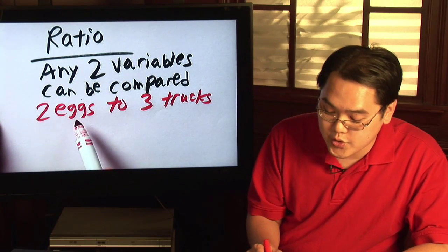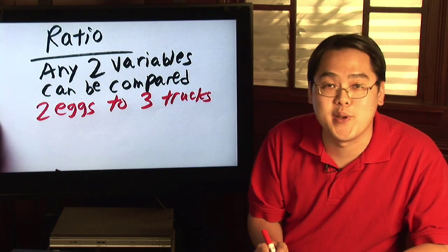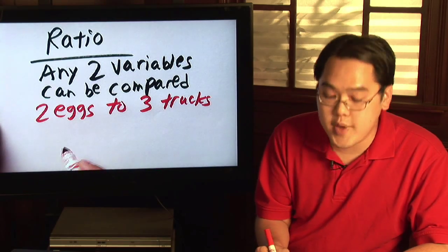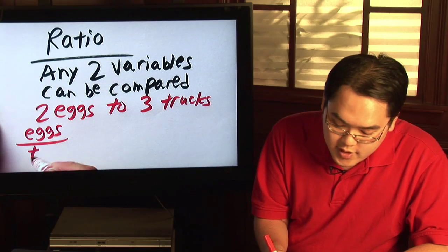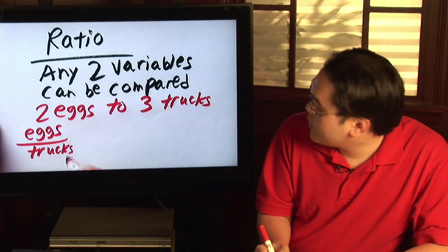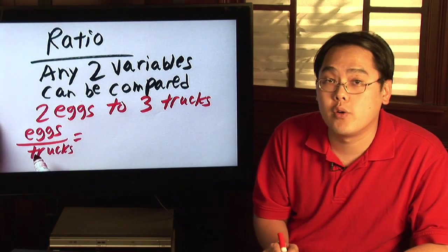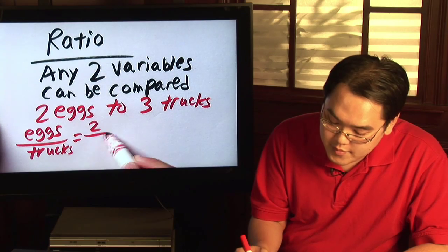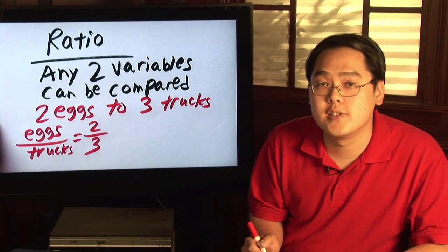You can either choose to compare eggs to trucks or trucks to eggs depending on the situation. So assuming if you want to compare eggs to trucks, then you're making a decision that eggs will be on top and trucks will be on the bottom. All you have to do is plug in the numbers that go with those things. So eggs has two, trucks has three. So one ratio that you can make is two thirds.